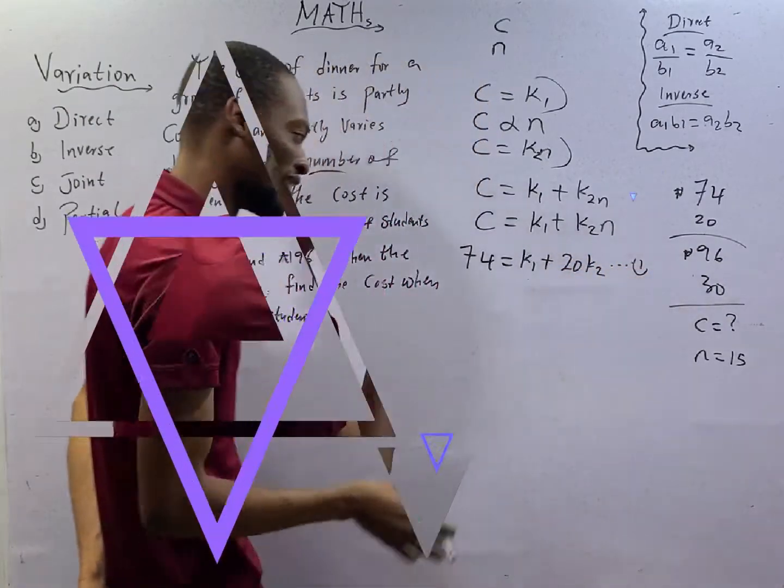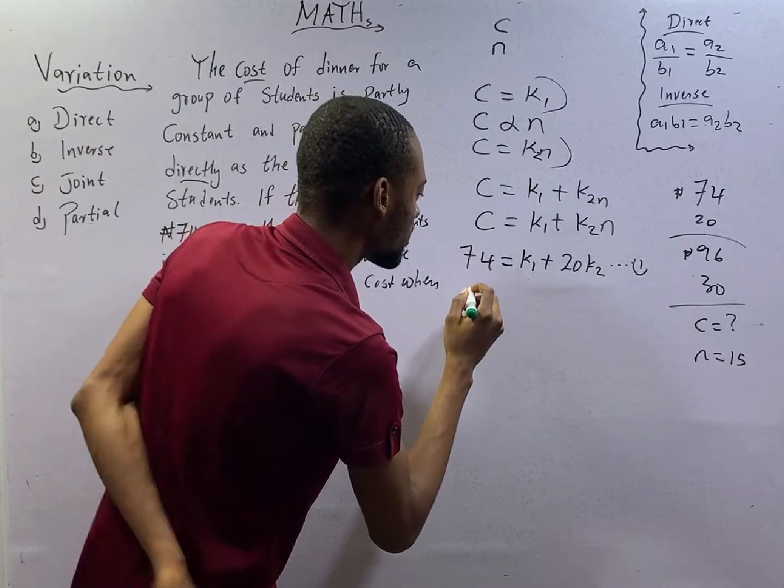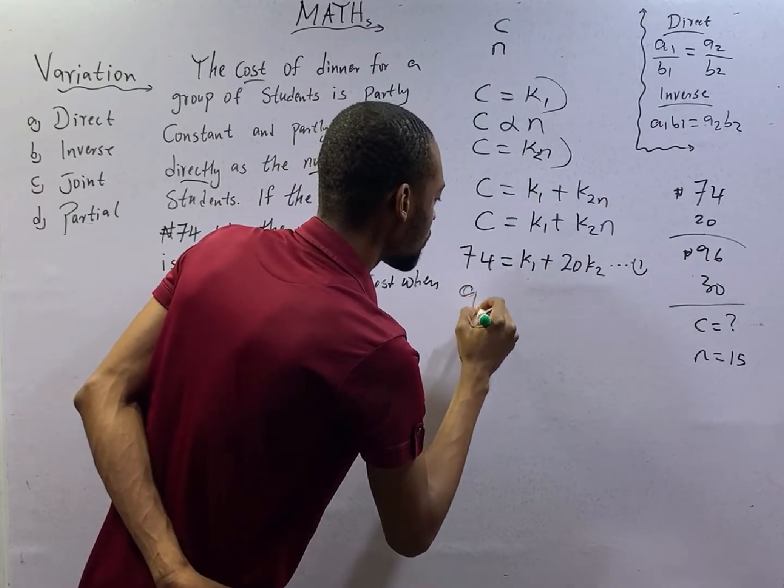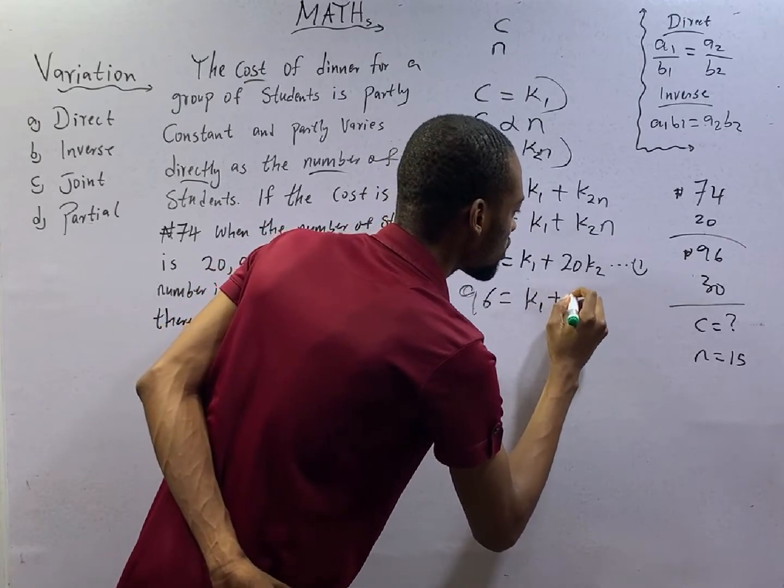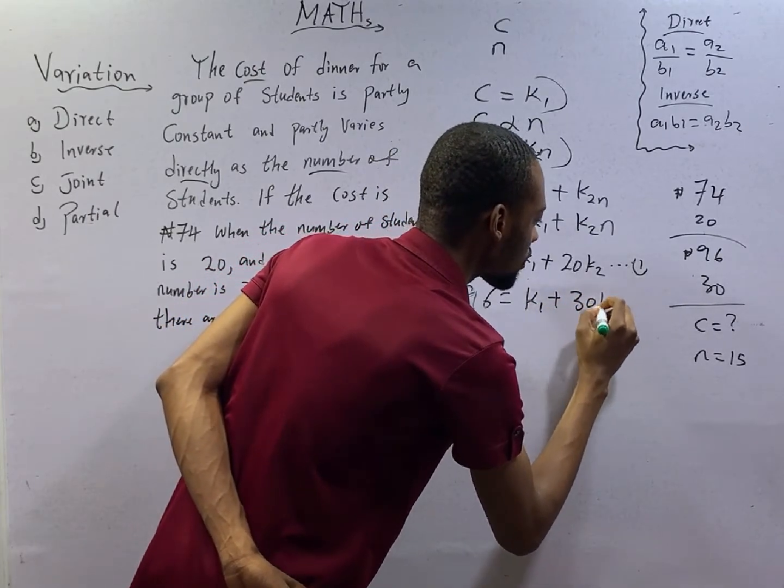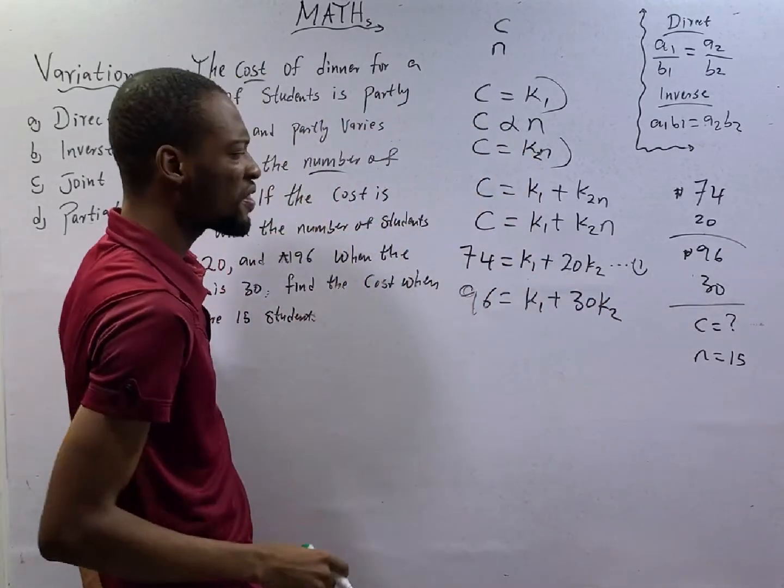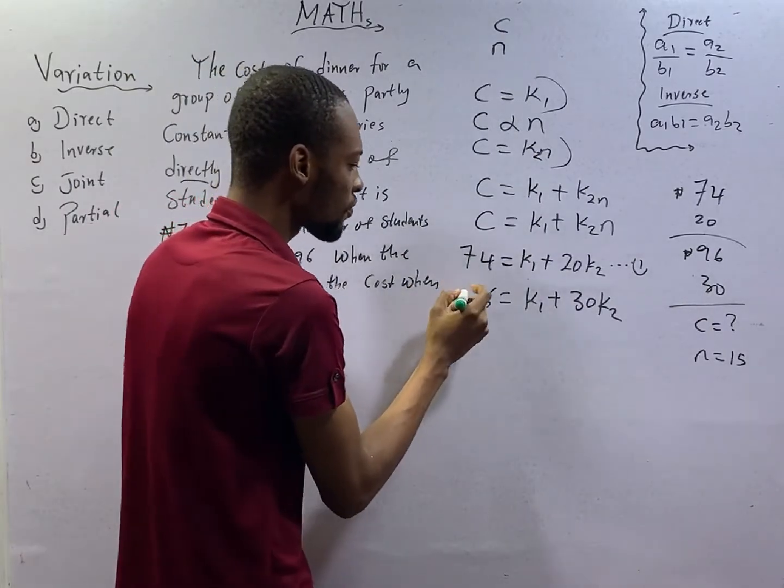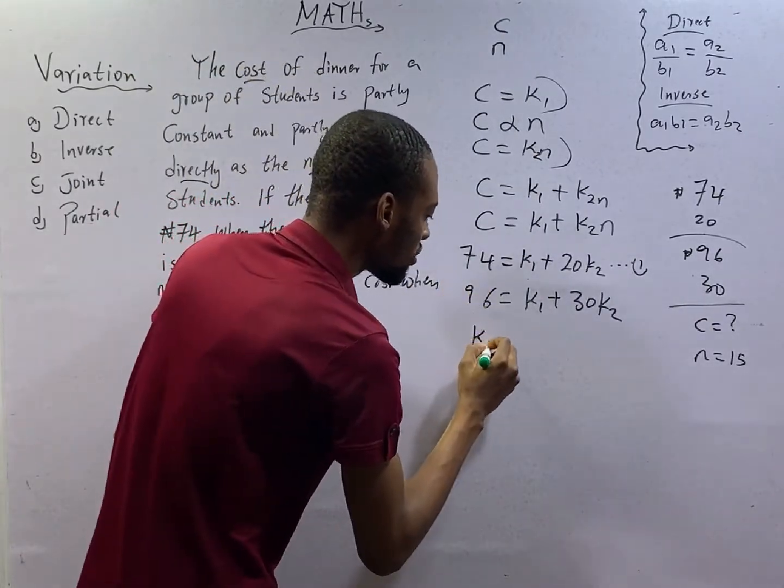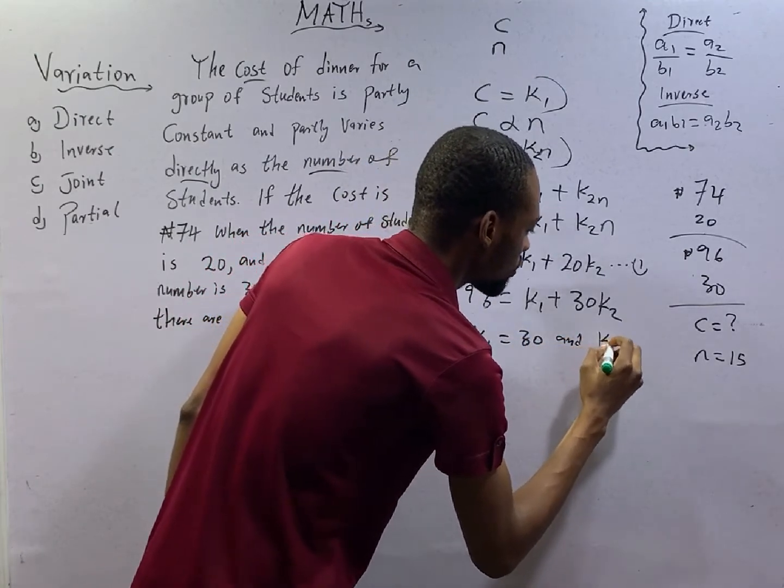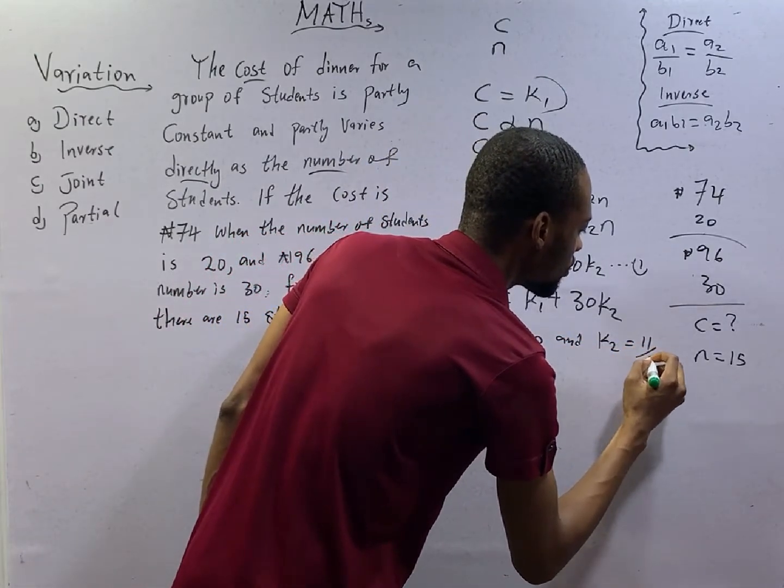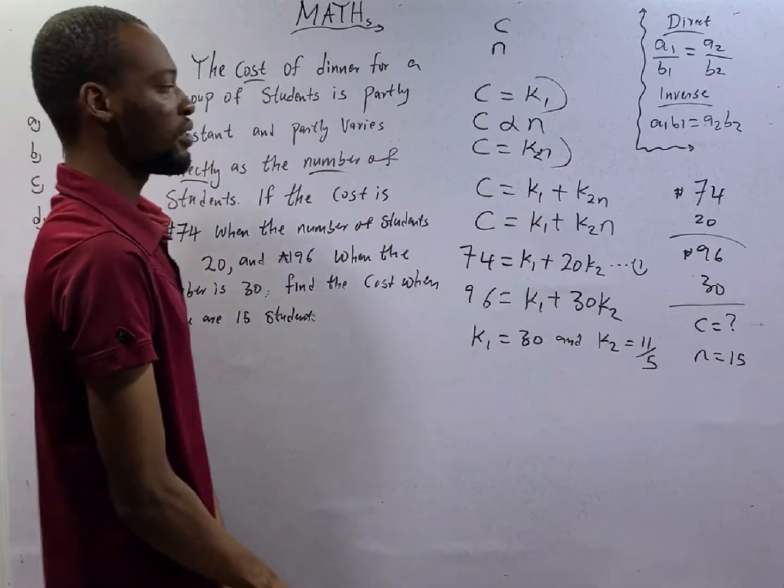For the second part, 96 equals K1 plus 30K2. Solving this simultaneously, K1 will give you 30 and K2 will give you 11 over 5.